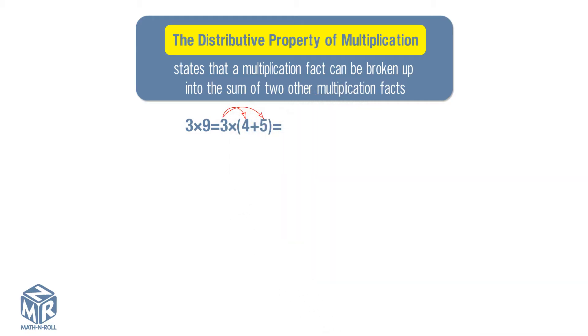Add the products. 3 times 4 plus 3 times 5 equals 12 plus 15, which equals 27.